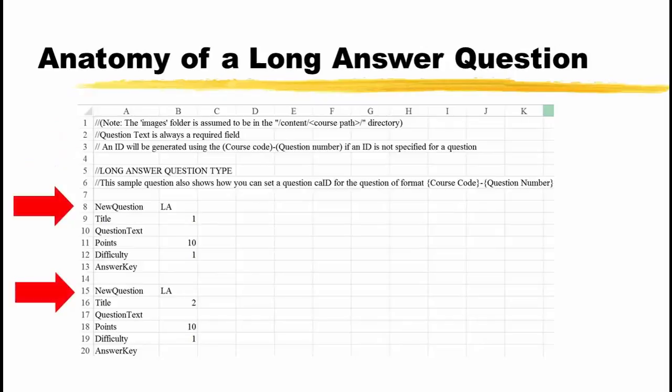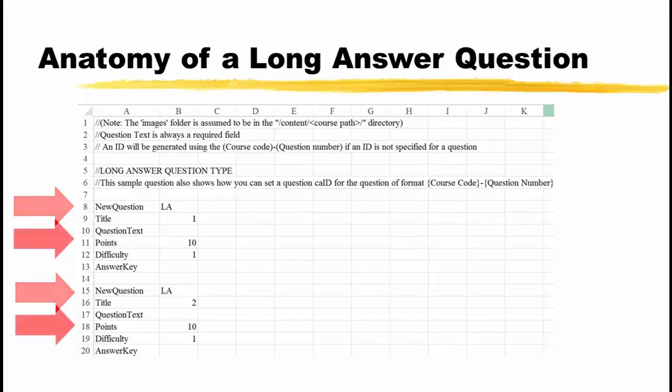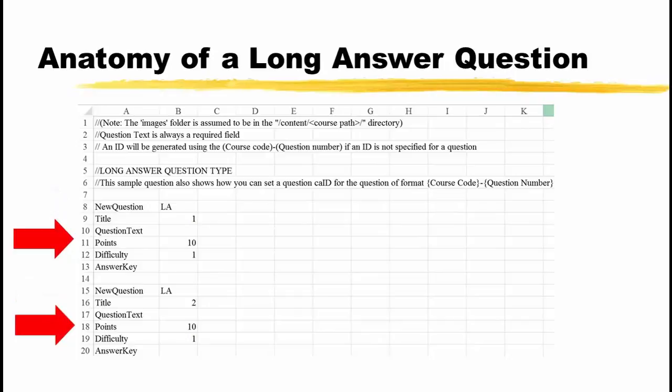This time, there is the word NewQuestion in cells A8 and A15 and question type LA, short for long answer, in cells B8 and B15. The words title, QuestionText, points, and difficulty are in cells A9 to A12 and A16 to A19. Their values are in cells B9 to B12 and B16 to B19. This is exactly like the true-false and multiple-choice questions.